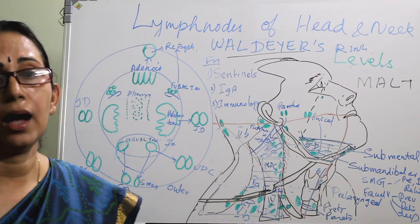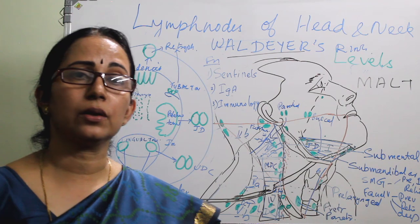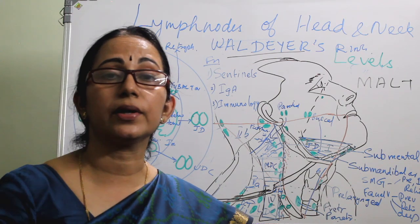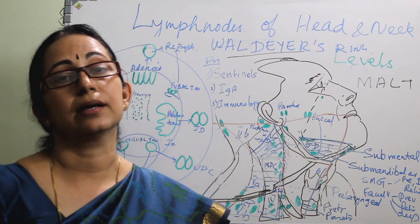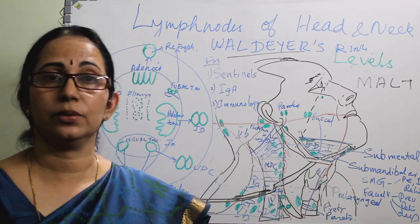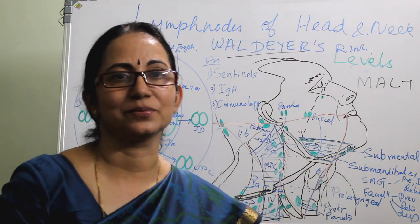That is regarding the lymph nodes of the head and neck. I explained about the different groups of lymph nodes, the different levels of lymph nodes, and also about the Waldeyer's ring. You have to be thorough with this, and then only can I proceed with the different types of neck dissections in the coming classes.